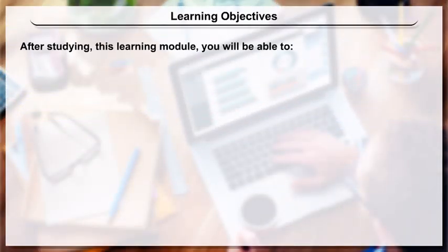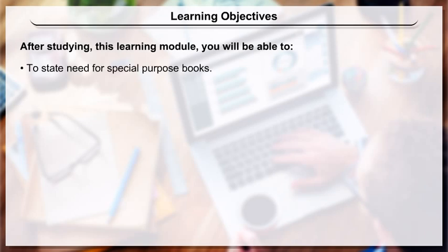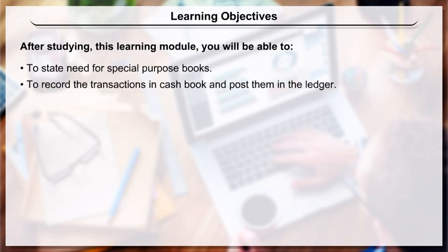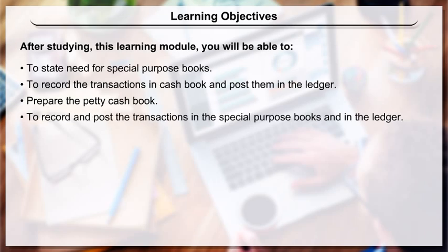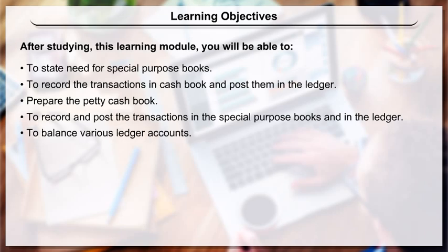Learning Objectives: After studying this learning module, you will be able to state the need for special purpose books, record transactions in the cash book and post them in the ledger, prepare the petty cash book, record and post transactions in the special purpose books and in the ledger, and balance various ledger accounts.